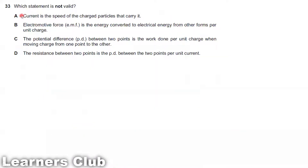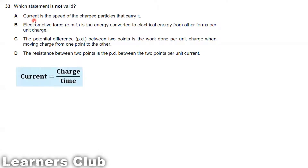Question 33: Which statement is not valid? Option A says current is the speed of the charge particles carrying it. The real definition of current is the flow of charge — it is not the speed of charge.